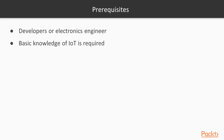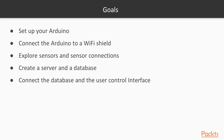This course is for developers or electronics engineers who need to understand how IoT works. Basic knowledge of IoT is required. The goal of this course is to set up your Arduino, connect the Arduino to a Wi-Fi shield, explore sensor connections, create a server and a database, and connect the database to the user control interface.